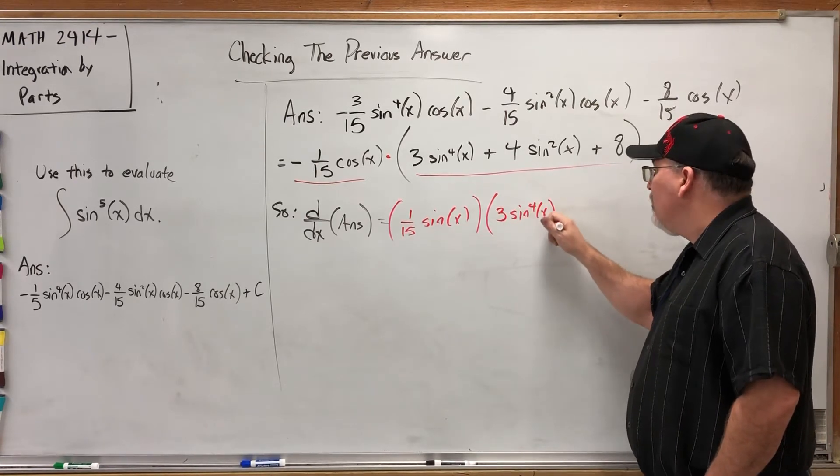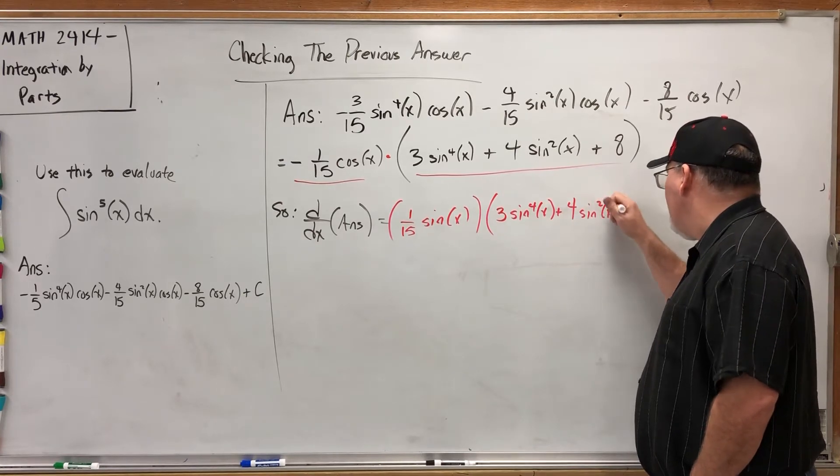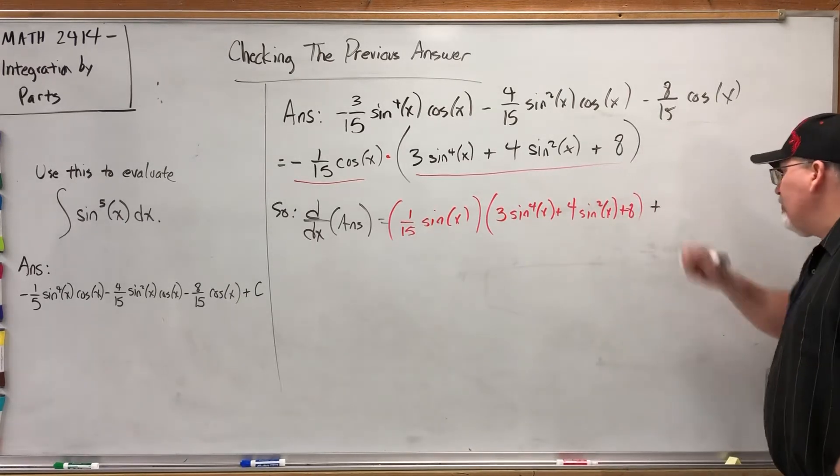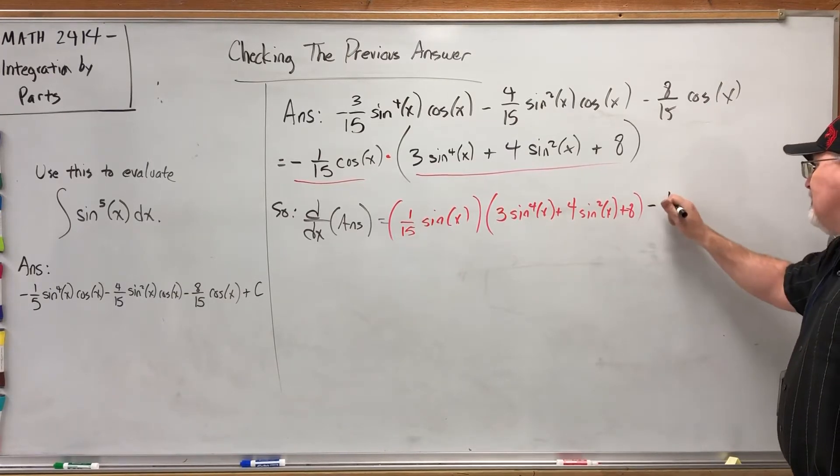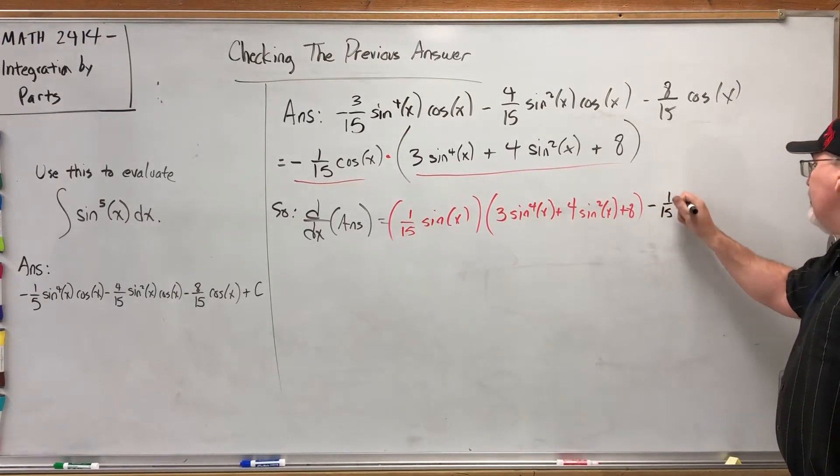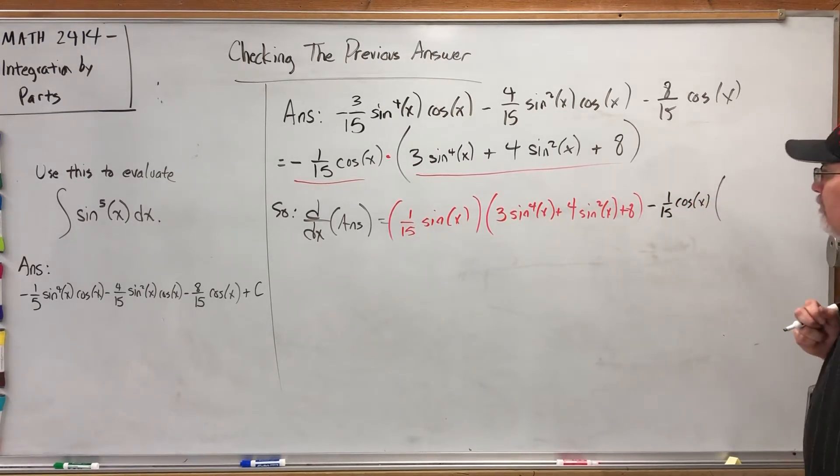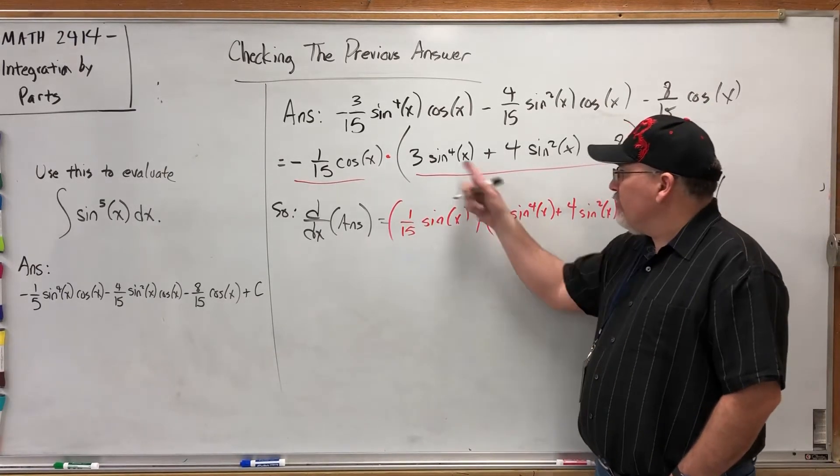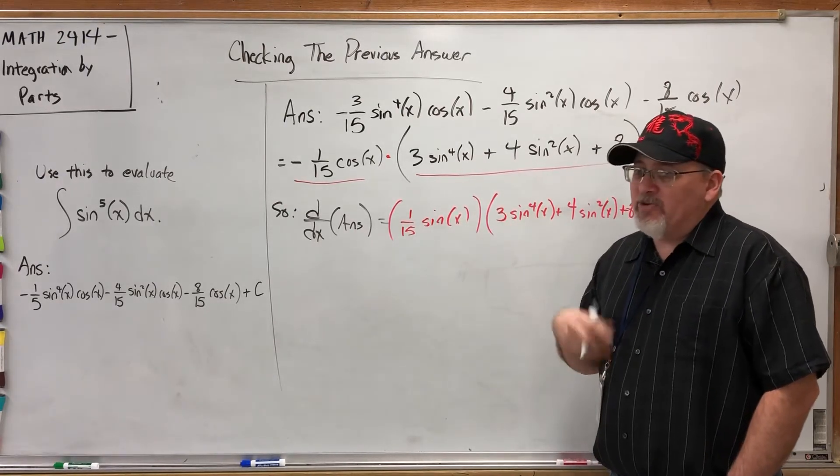So we get that times the second—I'm sorry, the derivative of the first times the second. So the second part stays the same: three sine to the fourth power of X plus four sine squared X plus eight. And then plus—we have enough room here—the first times the derivative of the second.